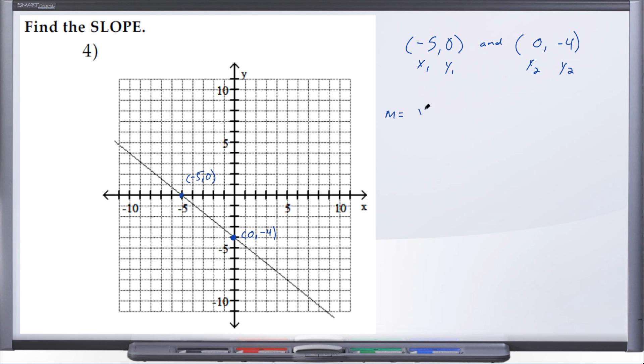So we're going to have y₂ minus y₁ over x₂ minus x₁. Let's go ahead and plug in our points and see what we get. So m equals y₂, well what's y₂? y₂ is -4 minus y₁, well what's y₁? Just 0. Over x₂, well what's x₂? Just 0 minus x₁, well what's x₁? -5.